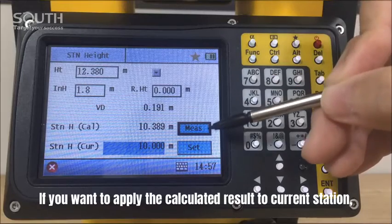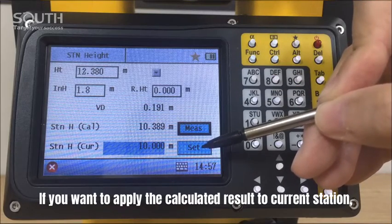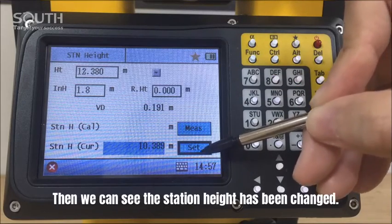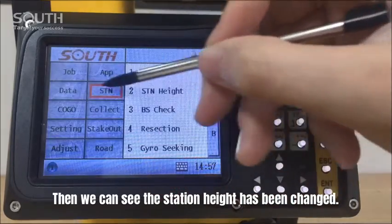If you want to apply the calculated height to the current station, press set. Then we can see the station height has been changed.